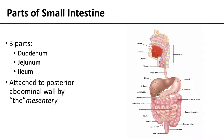The ileum will end at the ileocecal junction, which is the union of the terminal ileum and the proximal cecum, and at that point you're in the large intestine. So you go from stomach, duodenum, jejunum, and ileum into the large intestine.